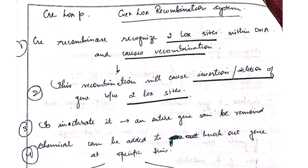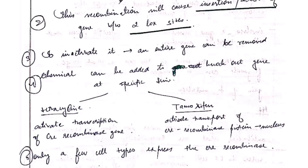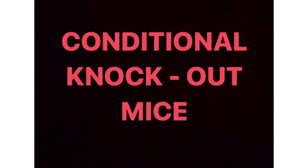The modified embryonic stem cells are introduced into the blastocyst cavity and implanted into a surrogate female mouse, where the embryo matures into a chimeric mouse. The offspring of the chimeric mouse carry the gene knock-in — the gene introduced and inserted between two loxP sites.